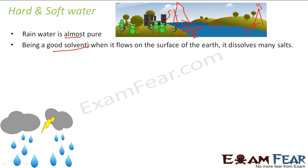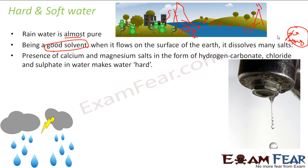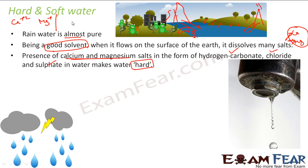Water is a very good solvent, and the moment it flows it dissolves a lot of salts. There are two different kinds of salts which cause hardness: calcium and magnesium. The presence of calcium and magnesium salts — in the form of hydrogen carbonates, chlorides, or sulfates — makes water hard. So on one side you always have calcium and magnesium, and on the other side carbonates, hydrogen carbonates, chlorides, and sulfates. These two are the culprits.